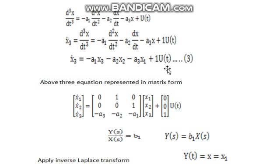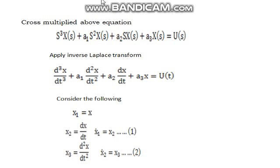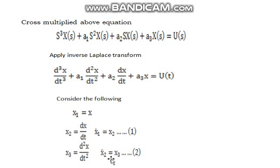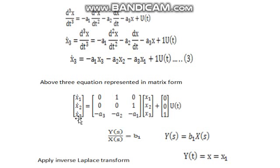These three equations can be represented in matrix form. From equation 1: x1_dot = 0·x1 + 1·x2 + 0·x3 + 0·u(t), giving x1_dot = x2. From equation 2: x2_dot = 0·x1 + 0·x2 + 1·x3 + 0·u(t), giving x2_dot = x3. From equation 3: x3_dot = −a3·x1 − a2·x2 − a1·x3 + 1·u(t). This is the state model equation.